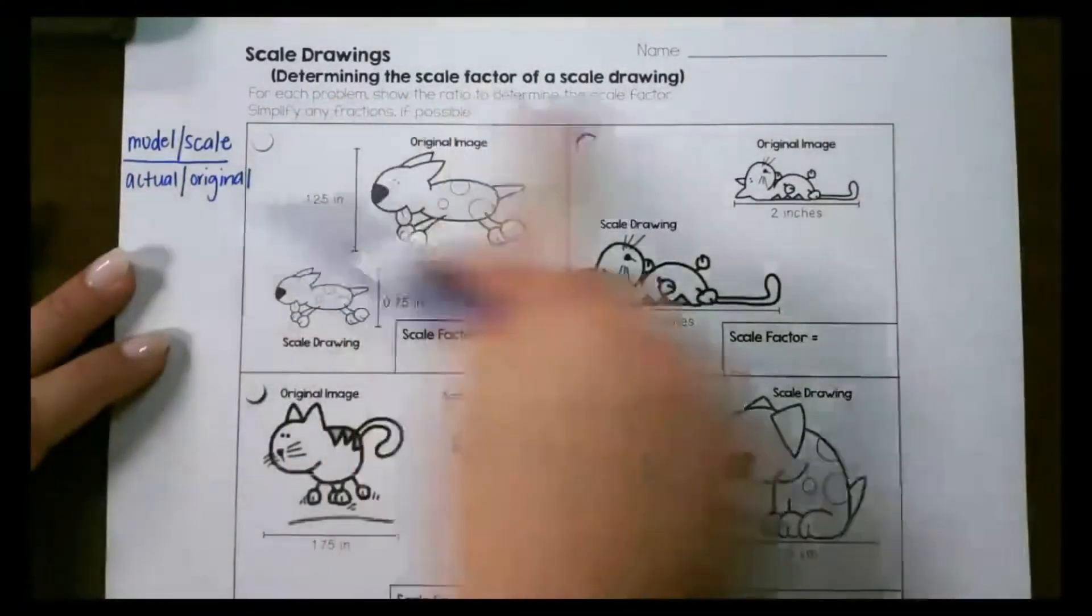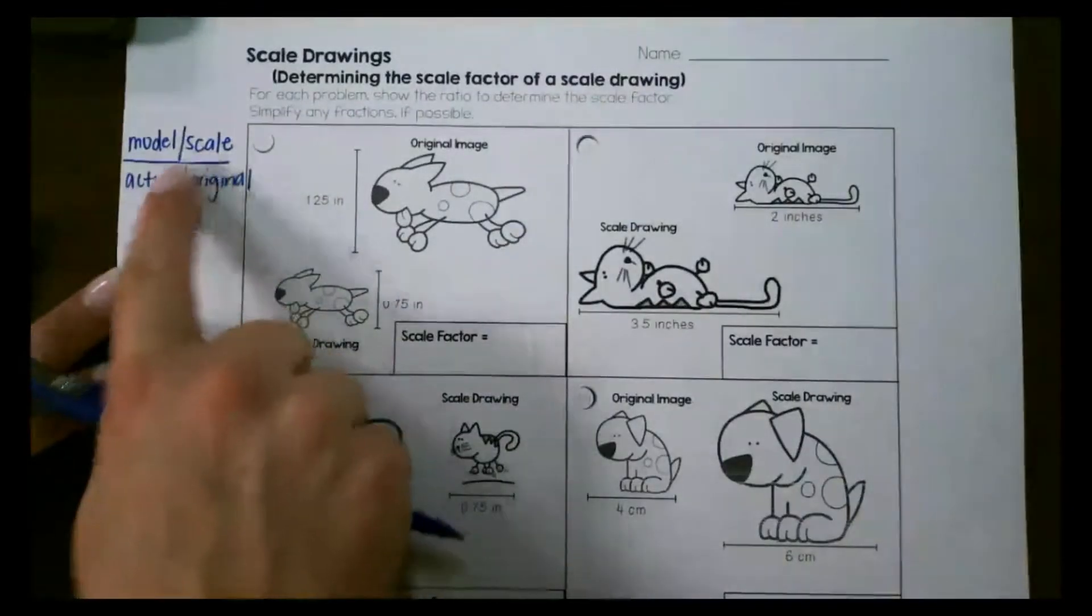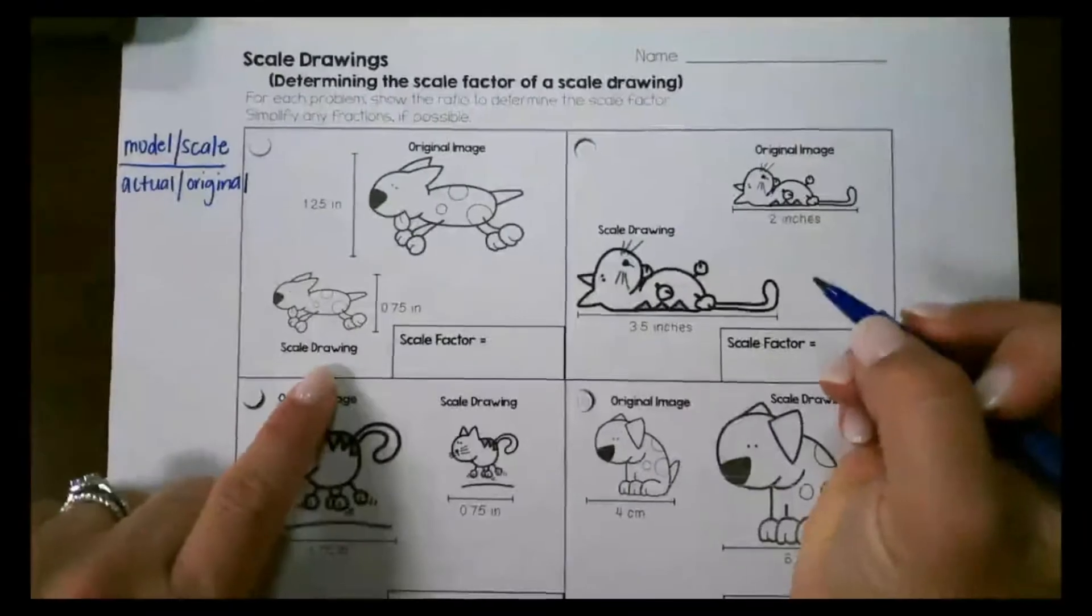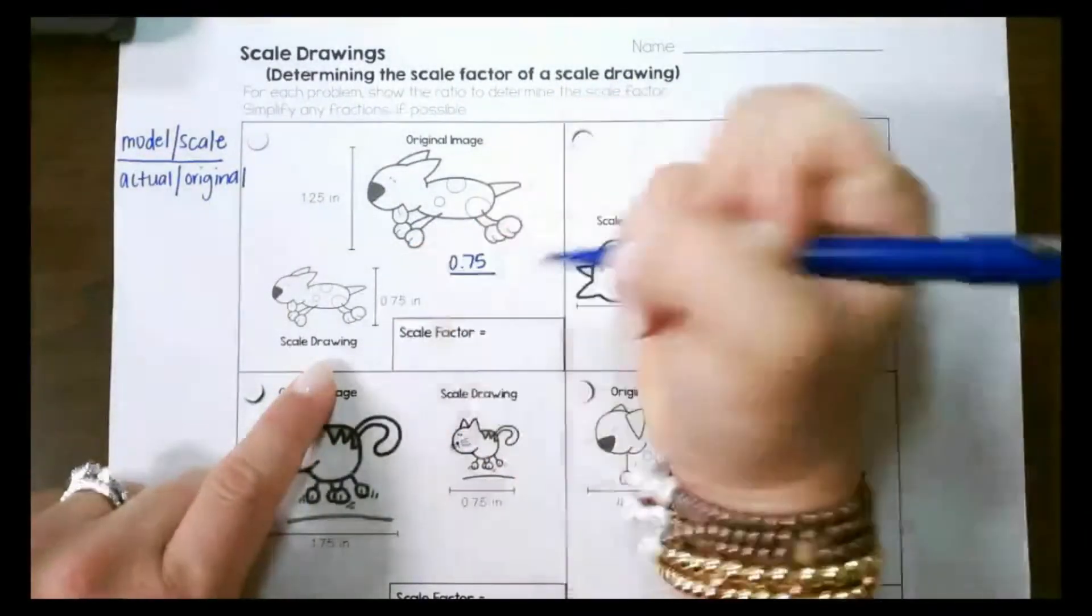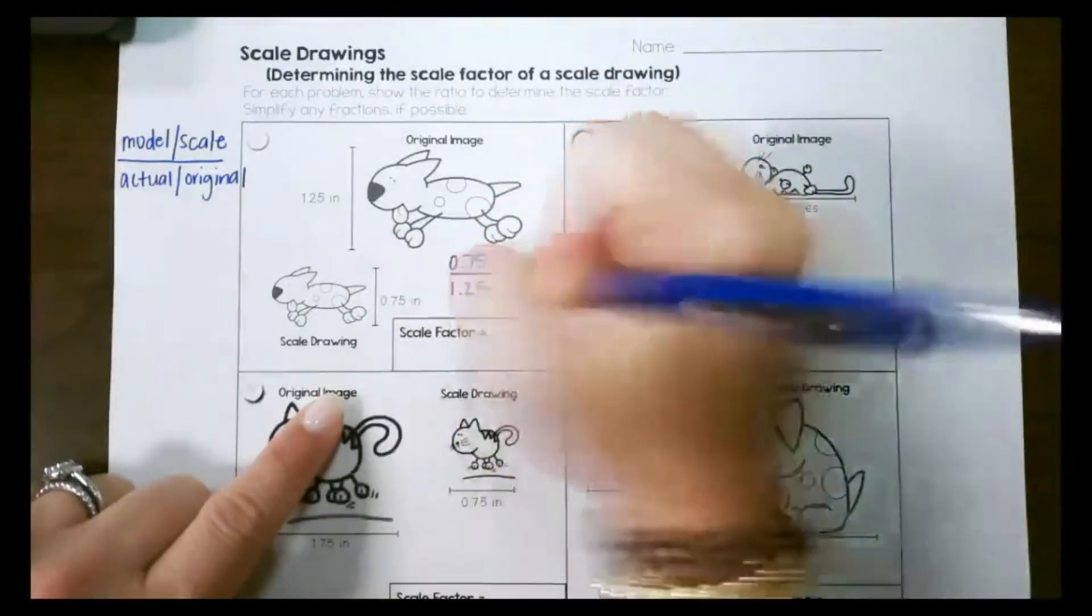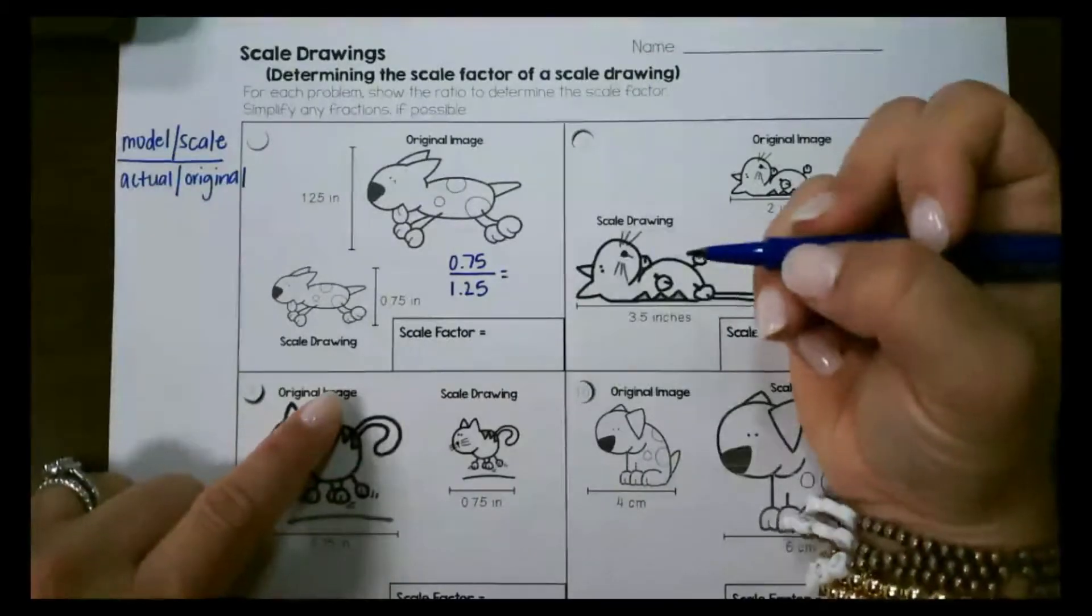Let's look at determining the scale factor of a scale drawing. We usually use the model or the scale over the actual or the original. So here the model or the scale is 0.75 and the actual or the original is 1.25. You can set this up as a ratio just like we did here and simplify it or divide it.